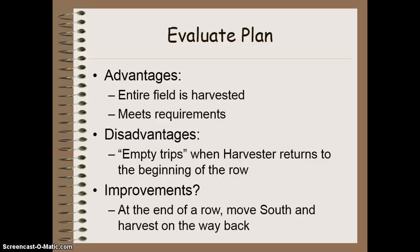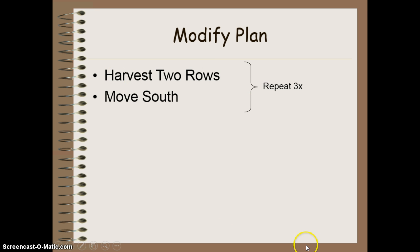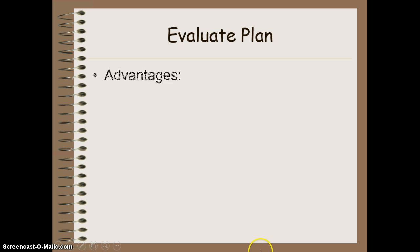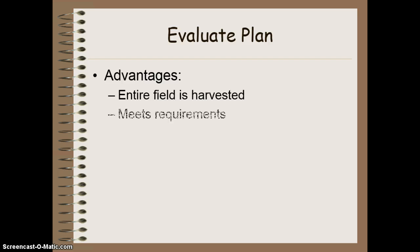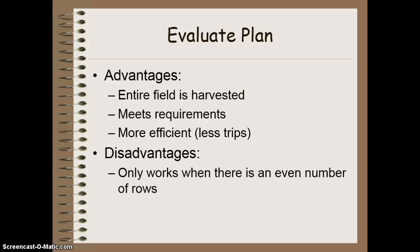Instead of going back at the end of the row empty-handed, we can move south and harvest all the things on our way back. So we modify the plan and create a 'harvest two rows' method, repeating this three times: harvest two rows, move south, harvest the next two rows, move south, harvest the next two rows. This plan is just as efficient in meeting all requirements, but it's done in fewer trips and less time. However, there's still a disadvantage — it only works when there's an even number of rows, but we'll ignore that for now and assume the fields always look the same.